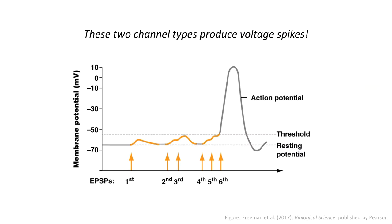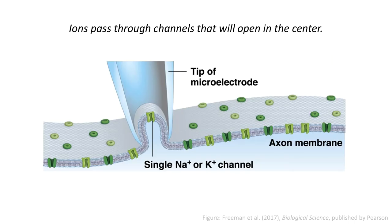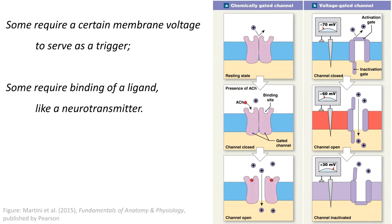These two channel types produce voltage spikes. Cells are full of ions that will exit and will enter. Ions pass through channels that will open in the center. Some require a certain membrane voltage to serve as a trigger; some require binding of a ligand, like a neurotransmitter.